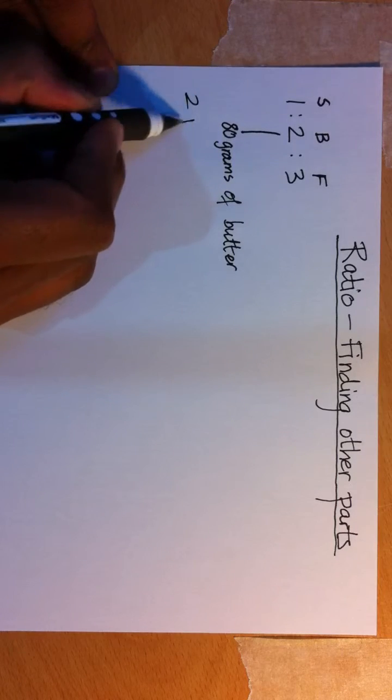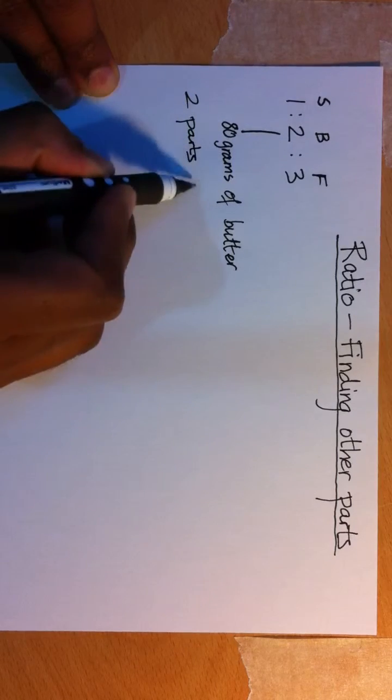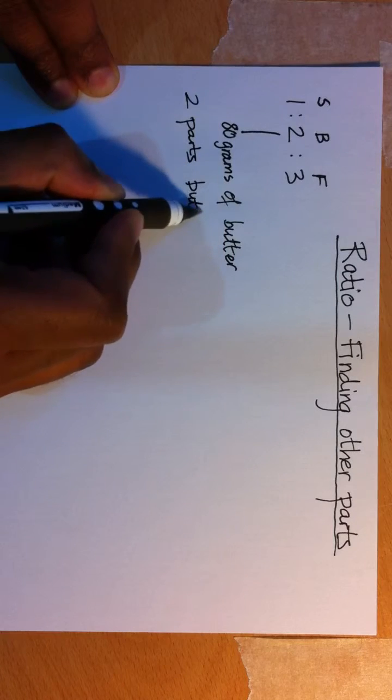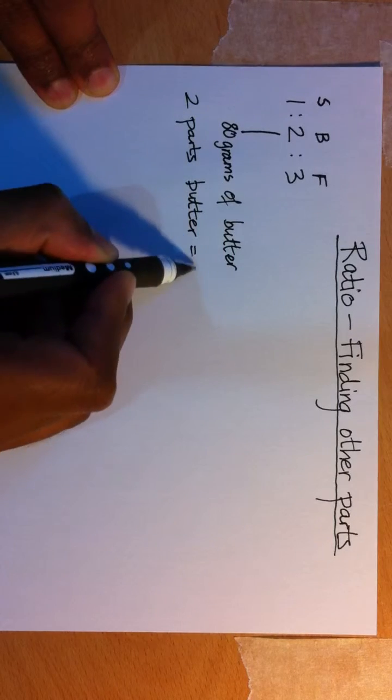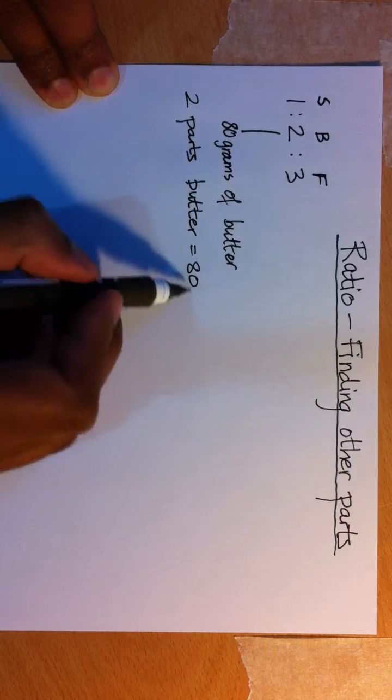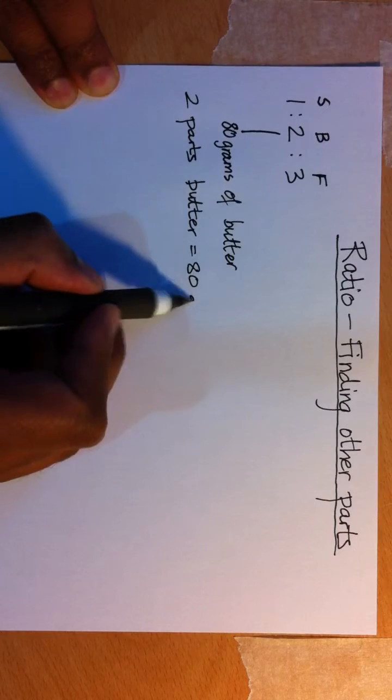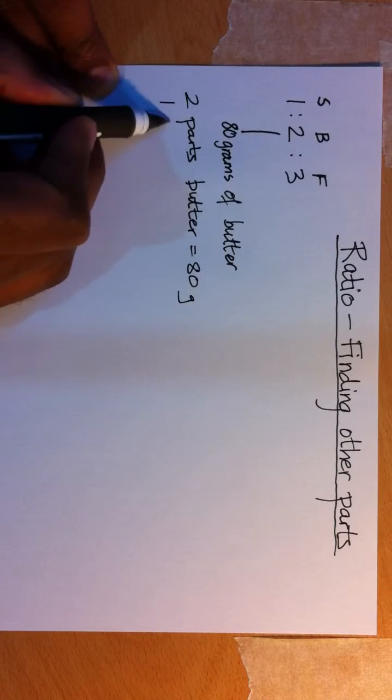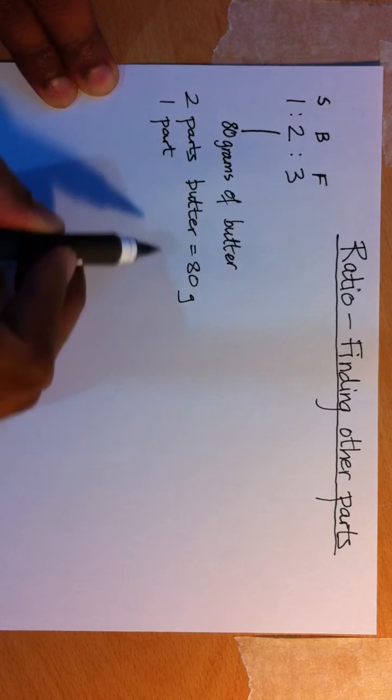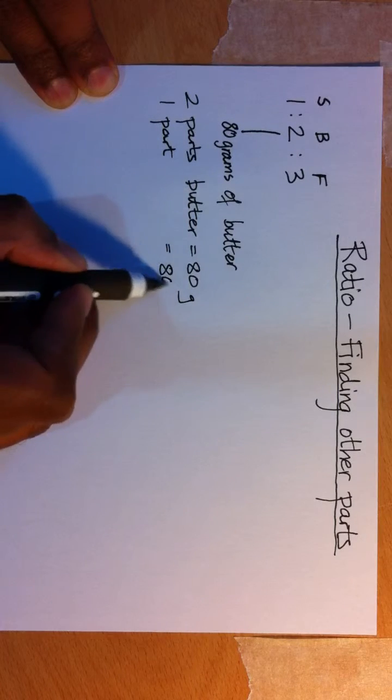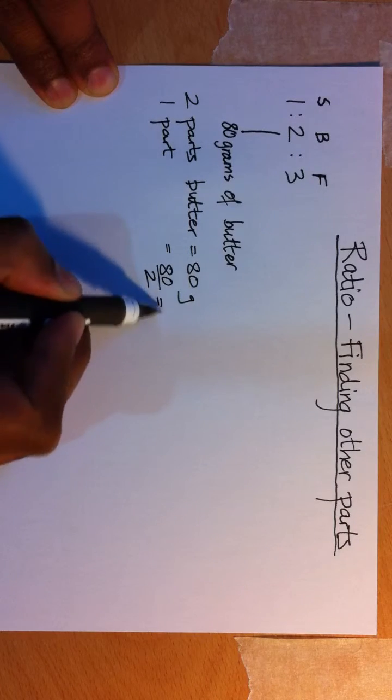We've got two parts butter. That's been given as 80 grams. So one part, in general, will be 80 divided by 2 equals 40.